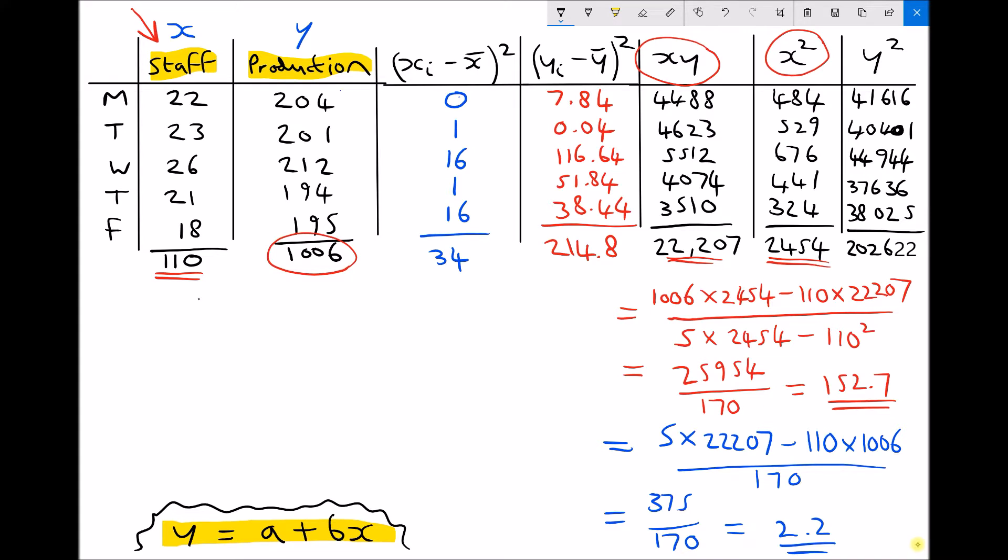Right at the start, we talked about how the manager of this production company wanted to see how the number of staff affected production. We said that staff was our x column of data and production was our y column of data.